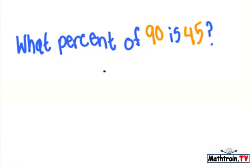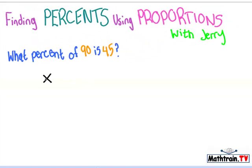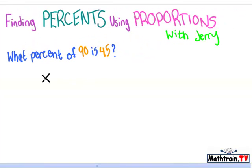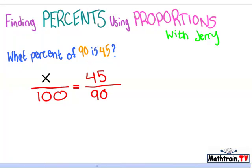What percent is unknown, so you put a variable. And percents are always out of 100, so you do over 100. And then you do 45 over 90, and then you cross multiply.